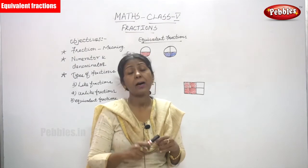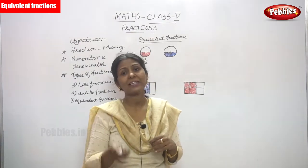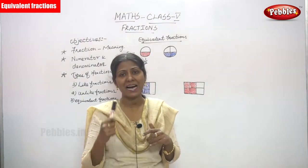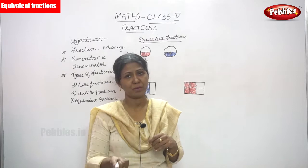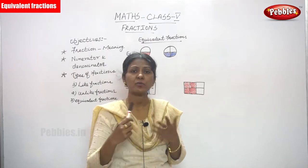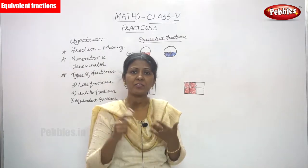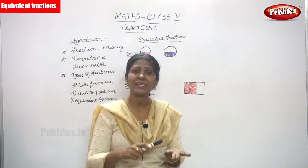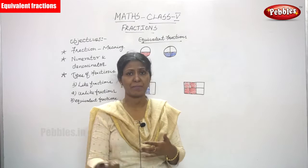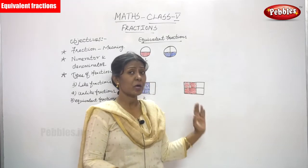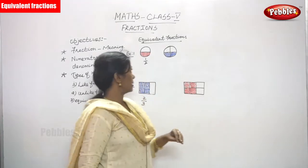Equivalent fractions can be found by multiplying the numerator and the denominator by the same number, or by dividing the numerator and the denominator by the same number. Now look at the example.